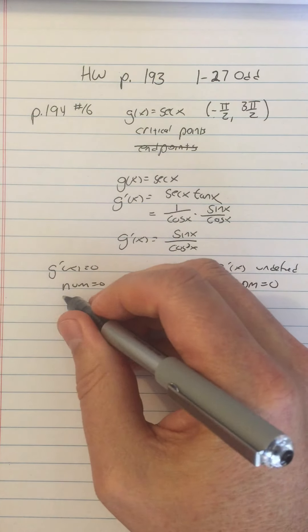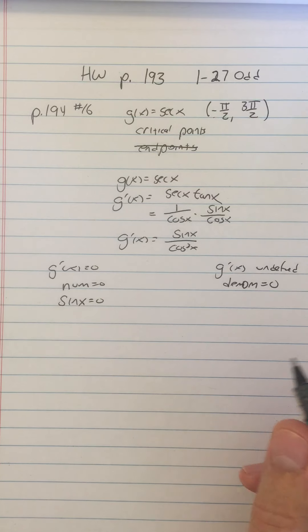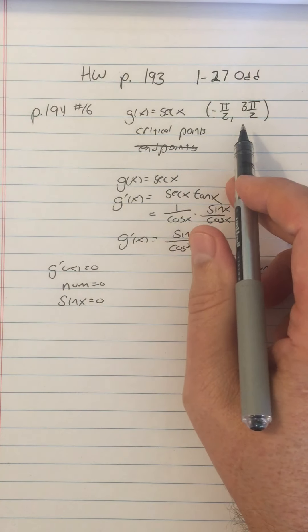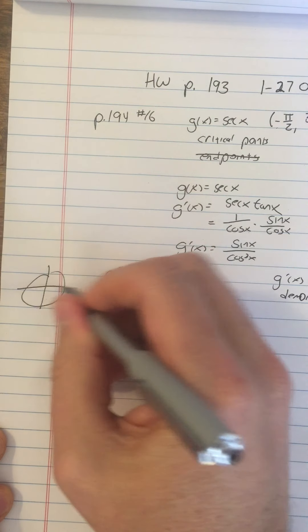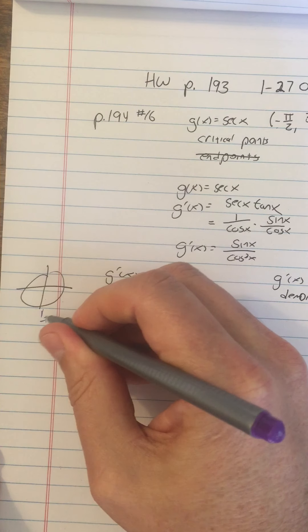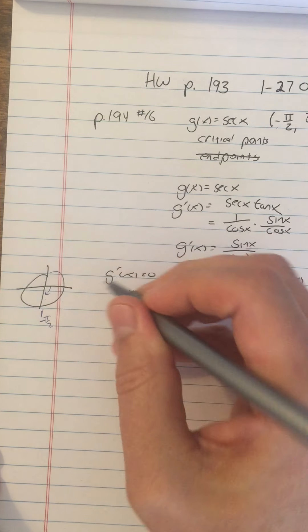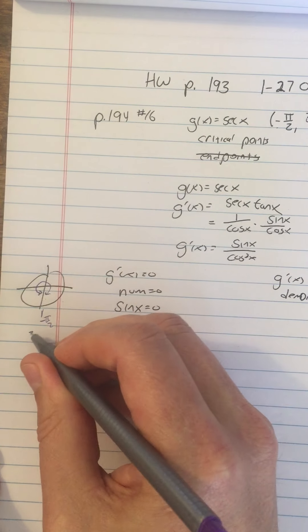To do my numerator equals zero I'm going to say sine of x equals zero. I might have to think about how am I going to know sine of x is zero within this interval. If I think about the unit circle, negative pi over 2 is down here, and we're going all the way around to positive 3 pi over 2 which is also down here. They are coterminal angles.